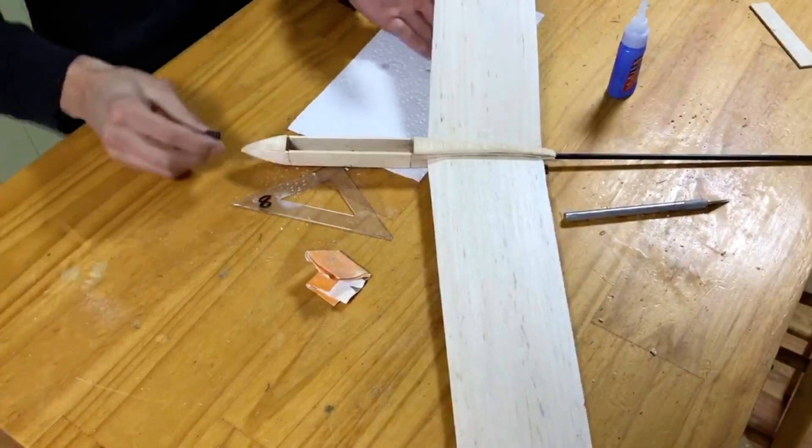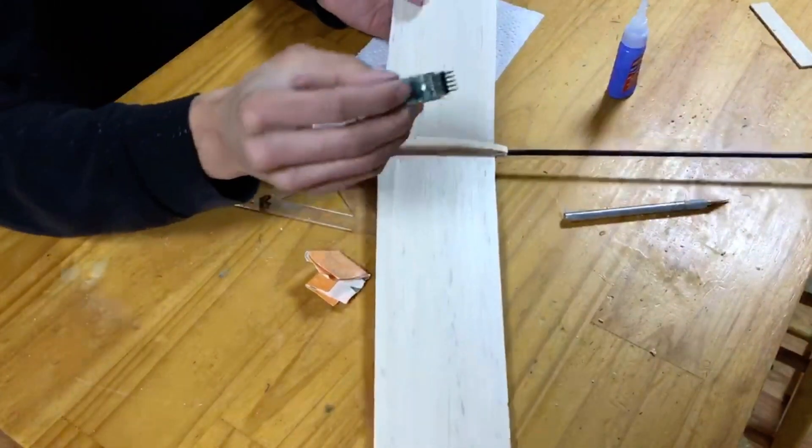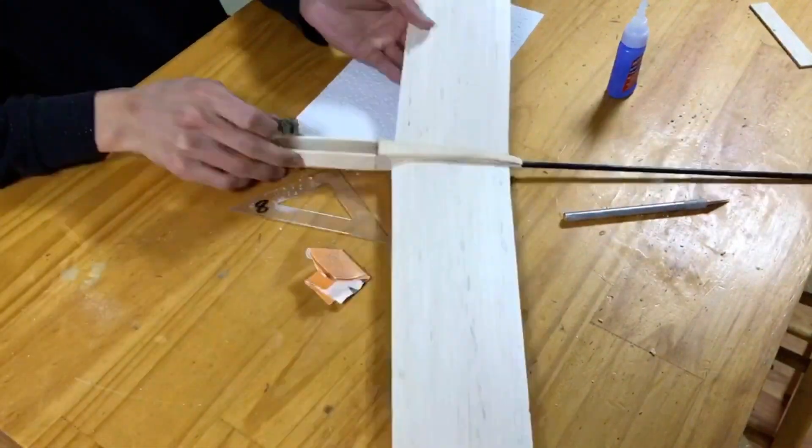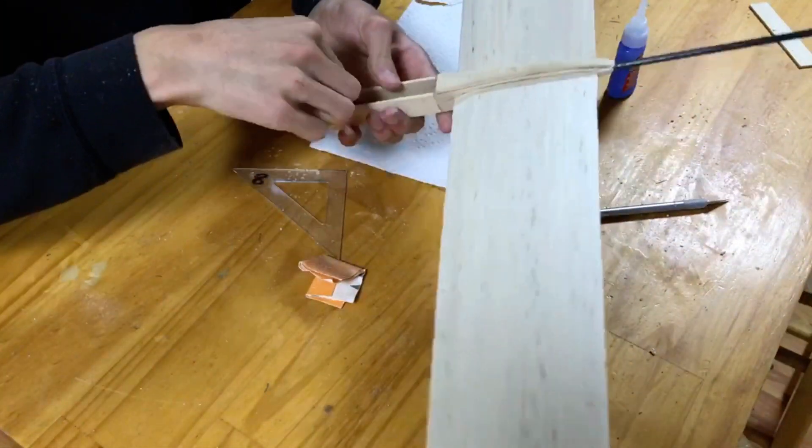It's now time to choose what receiver you're going to use. You'll take that receiver and make a pen mark one receiver length back from the beginning of the center section of the fuselage. You'll see I'm doing that here.